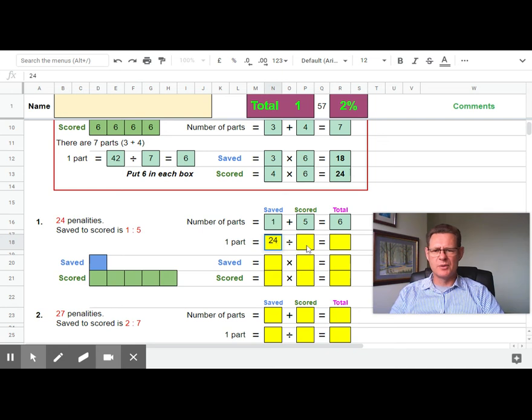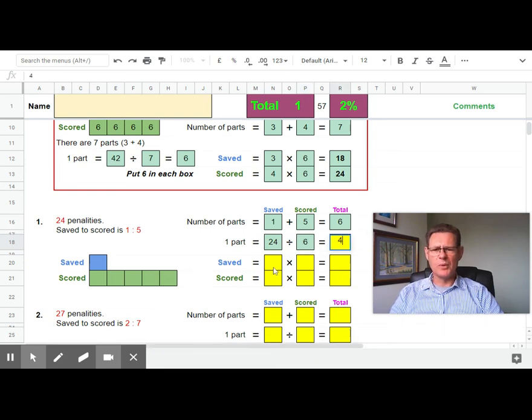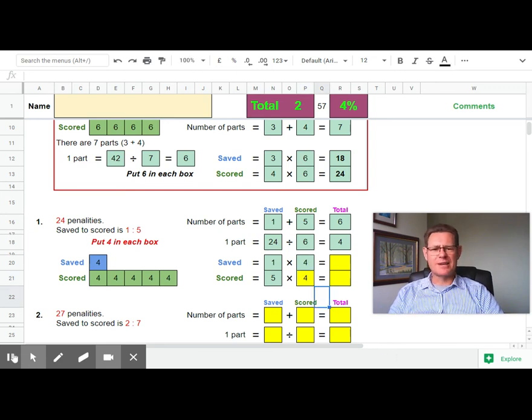We're going to split 24 into six parts, which is four. We're going to take the fact that there's one part and five parts, and multiply that by the four that's in each box. I'll leave you to finish that one off. Hope that goes well.